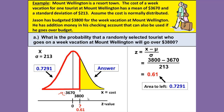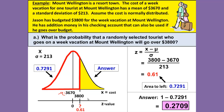So that is the area to the left. Remember that we're using a table that always gives us the area to the left. Since we're looking for the area to the right, our answer will be 1 minus 0.7291, which gives us 0.2709.